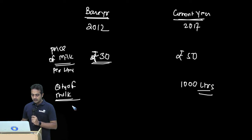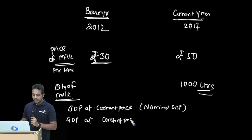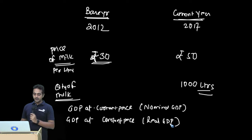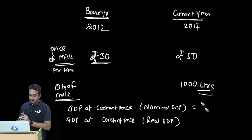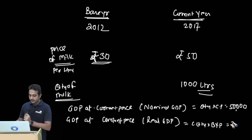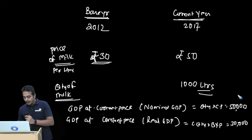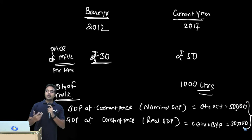So what we can calculate: GDP at current prices — we are also going to call this nominal GDP — and GDP at constant prices, meaning the price of the base year, which we call real GDP. To get nominal GDP: current quantity times current price = 1000 × 50 = 50,000. To get real GDP: current quantity times base year price = 1000 × 30 = 30,000.